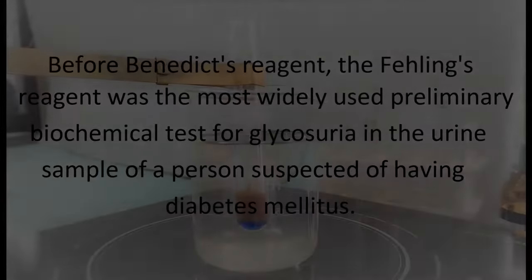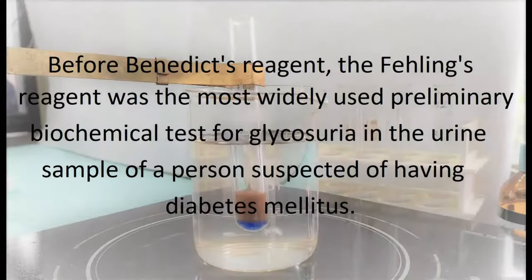Before the discovery of the much more stable and improved Benedict's reagent by Stanley Rossiter Benedict in the beginning of the 20th century, Fehling's reagent was the most widely used preliminary biochemical test for glucose in urine samples of persons suspected of having diabetes mellitus. Glycosuria is the term used when glucose is present in urine. This test is now largely replaced by Benedict's test in routine clinical tests because of its convenience, stability, and ease of use.